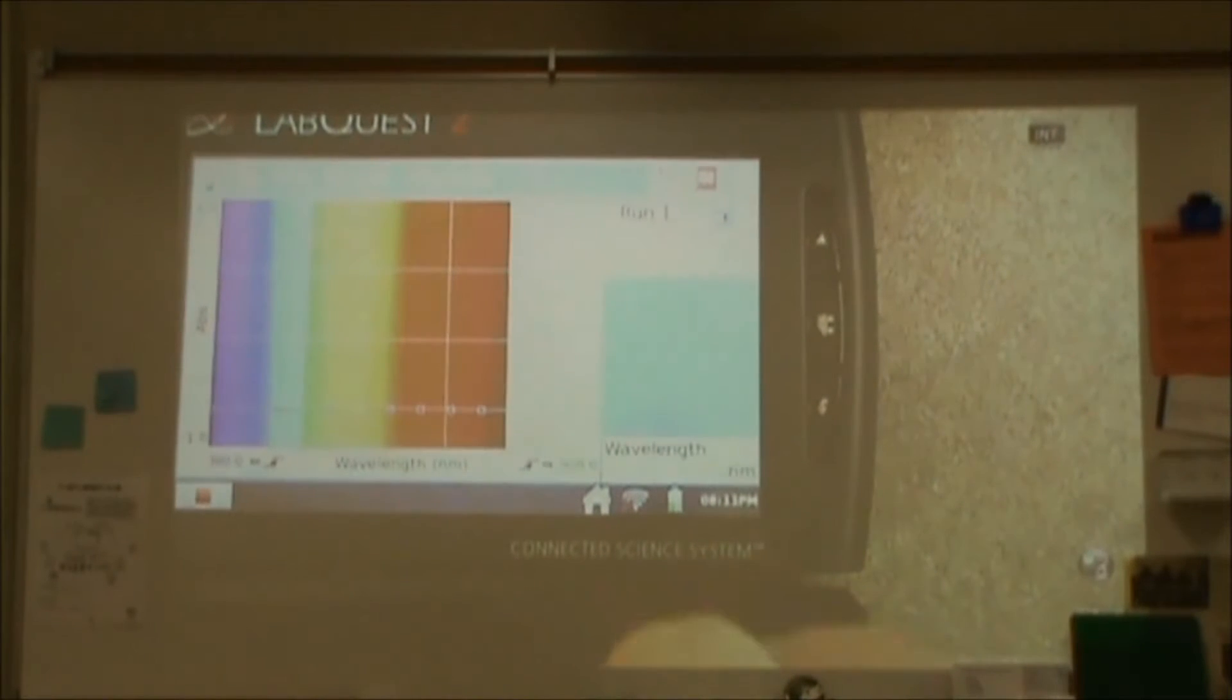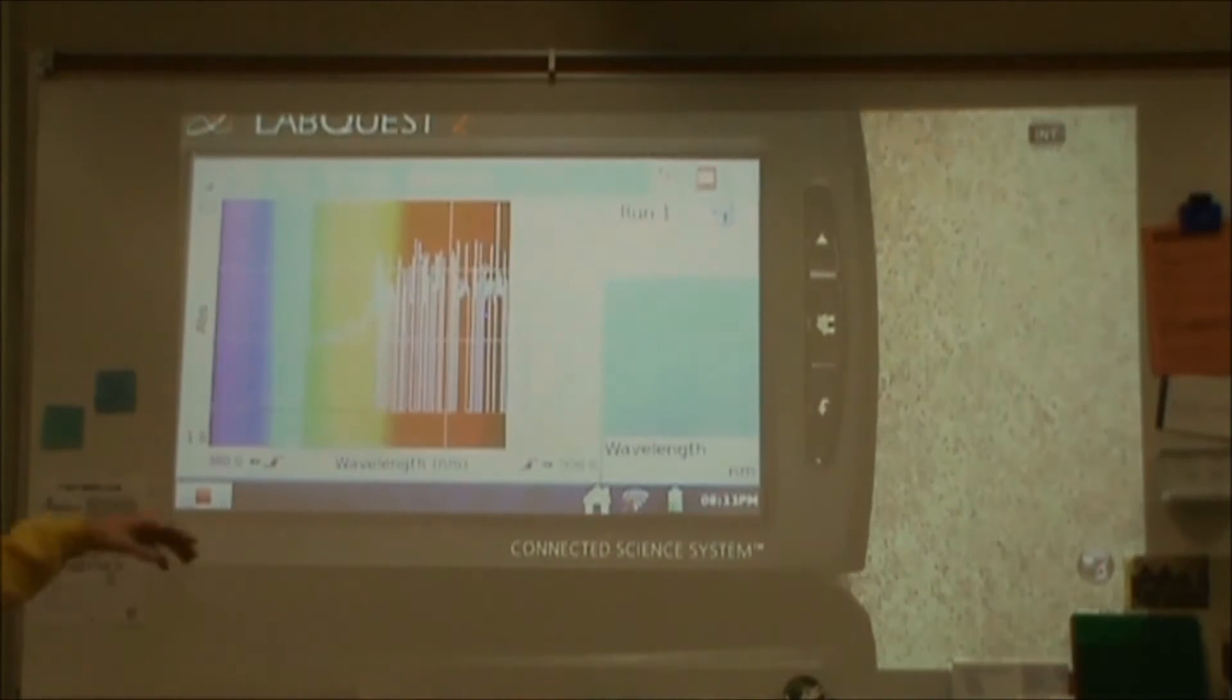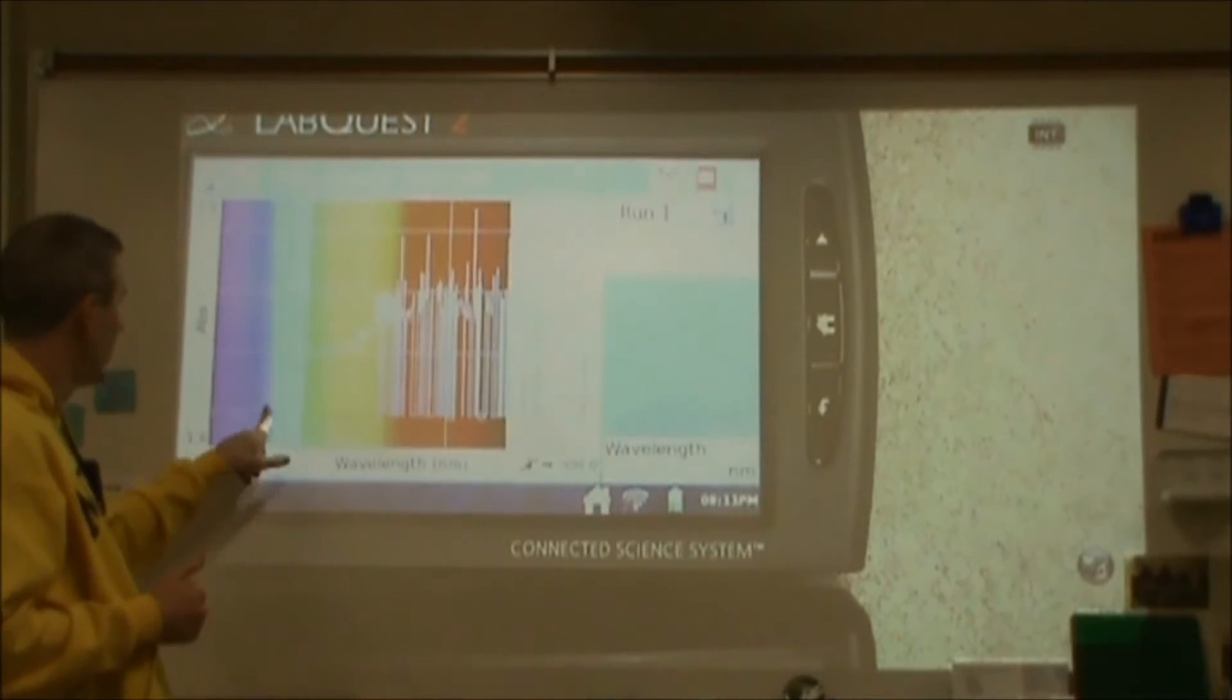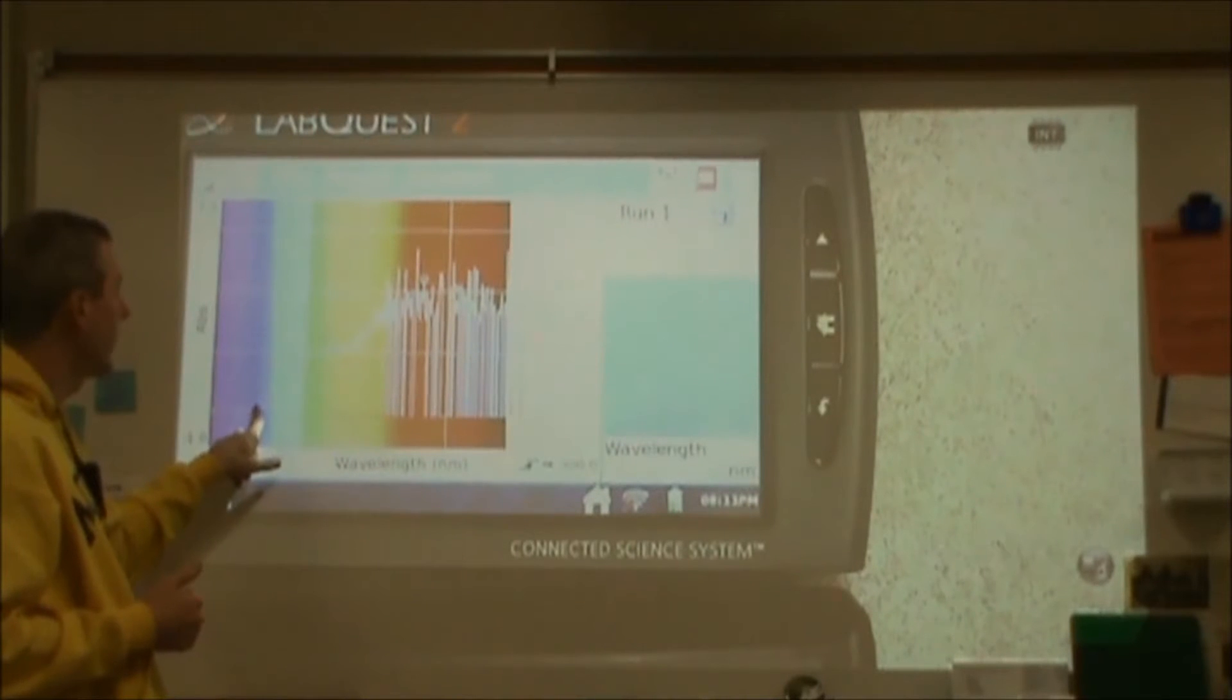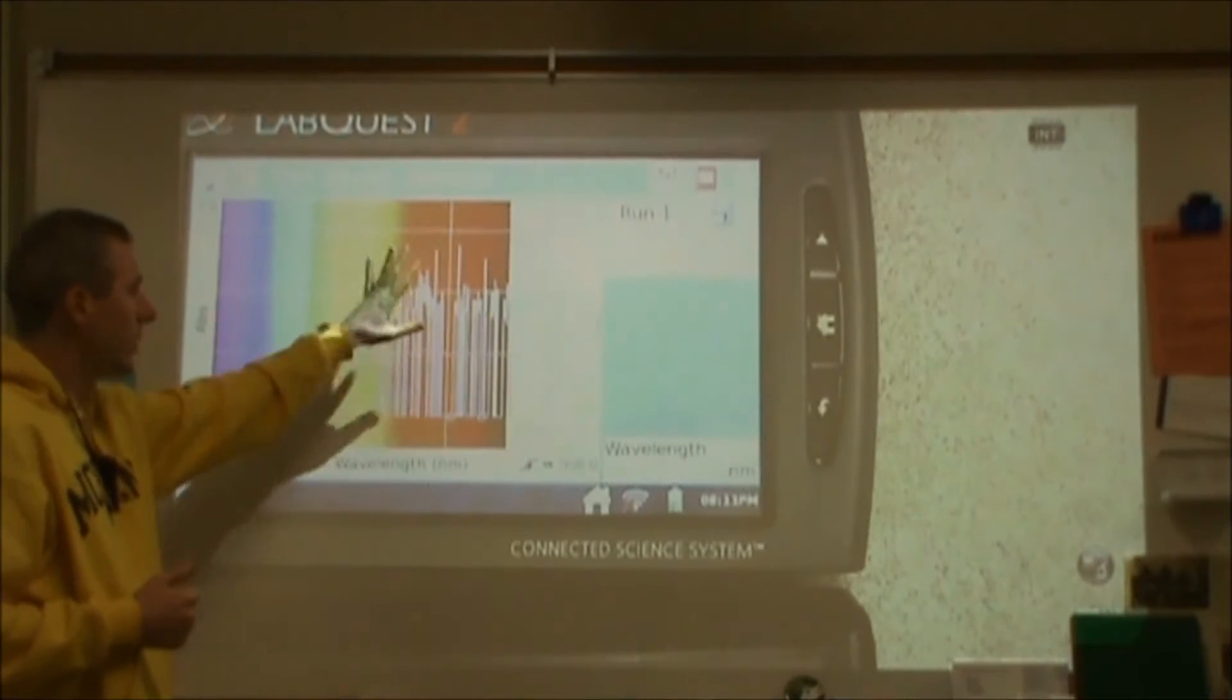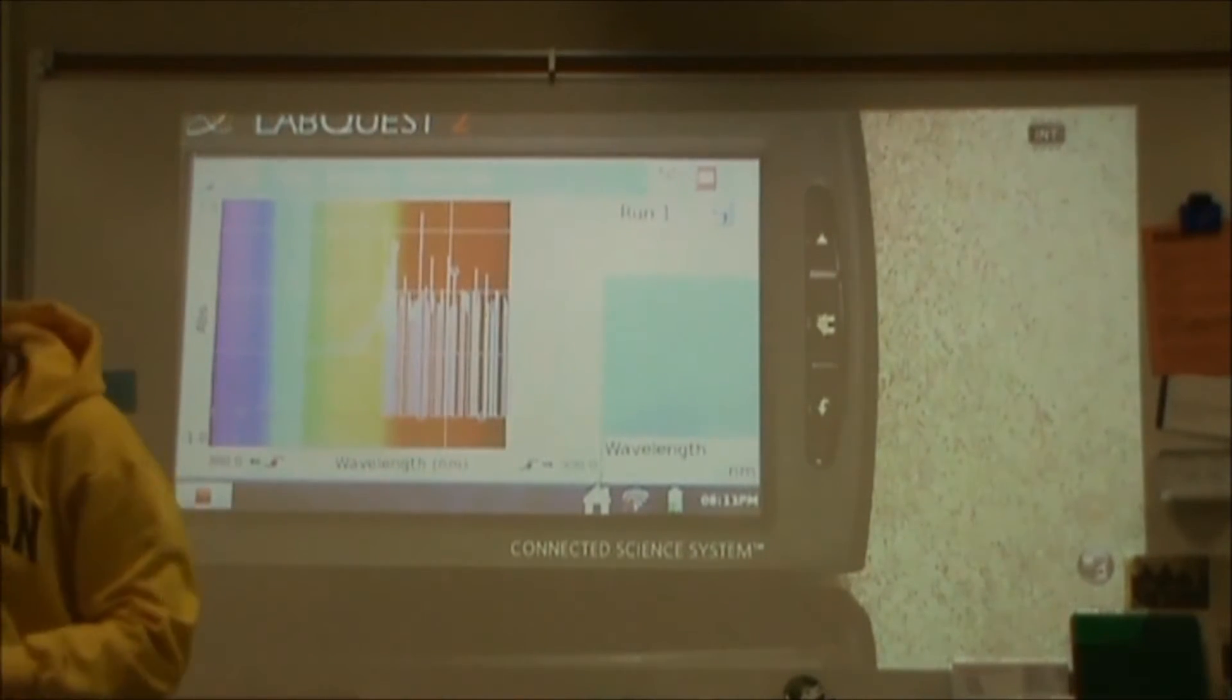Here's our royal blue. Now this one's not going to work very well because it's so dark. It's going to absorb a lot of light. But again, you can see that the blue is being transmitted along with some of the violet, and then the other colors are getting absorbed to the point where they're kind of messing up the apparatus.